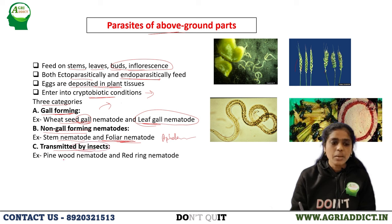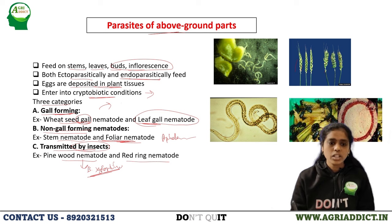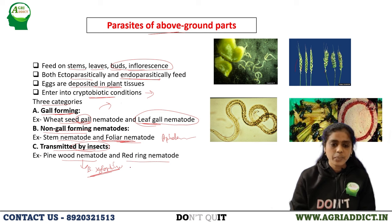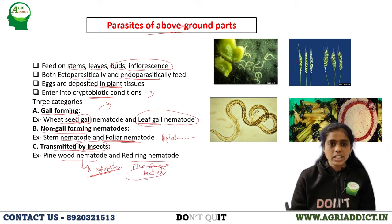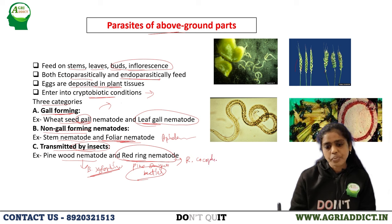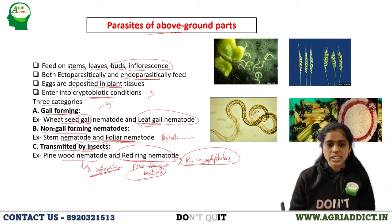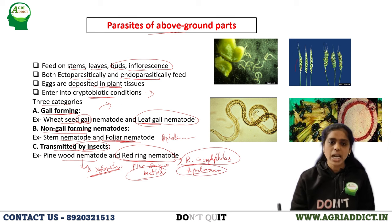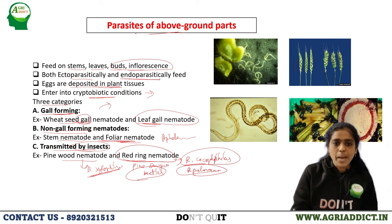Nematodes transmitted by insects include pinewood nematode, Bursaphelenchus xylophilus, transmitted by the pine sawyer beetle, Monochamus alternatus. These insects, while feeding on plant tissue, take up the nematodes and transmit them to healthy plants. Red ring nematode, Rhadinaphelenchus cocophilus, is transmitted by the palm weevil, Rhynchophorus palmarum. The insects play a major role in transferring nematodes from infested plants to healthy plants.